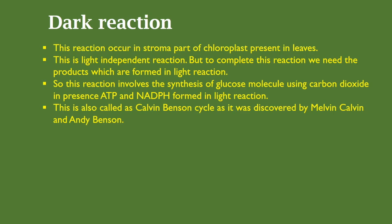The second part of photosynthesis is the dark reaction. This reaction occurs in the stroma part of the chloroplast present in leaves. It is a light-independent reaction, but requires the products formed in the light reaction. It involves the synthesis of glucose molecules using carbon dioxide in the presence of ATP and NADPH formed in the light reaction. This is also called the Calvin-Benson cycle, as it was discovered by Melvin Calvin and Andy Benson.